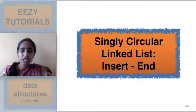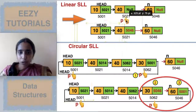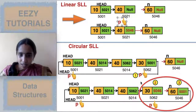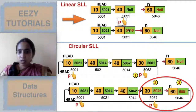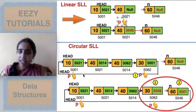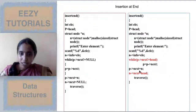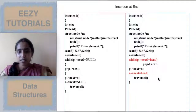For insertion at the end, you are inserting at the end part so there is a change. You create a new node, then use pointer p to traverse to the last node — same as before but the condition will change. After reaching the last node, set p->next equal to n's address. In a linear linked list n->next would be null, but here n->next should be head. That is the only difference for insertion at the end in a singly circular linked list.